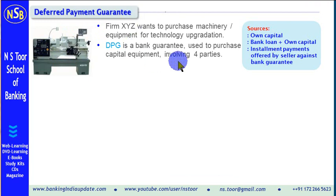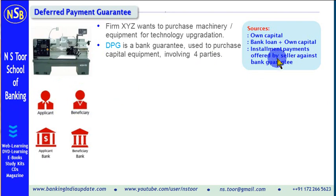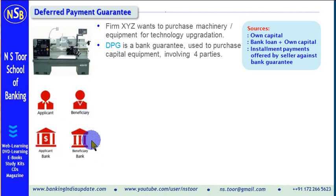In a Deferred Payment Guarantee, there are four parties. These four parties are: one is the applicant, that is the buyer. Second is the beneficiary of the guarantee, that is the seller. Third is the applicant's bank, the bank which issues this guarantee. And fourth is the bank of the beneficiary, that is the beneficiary's bank.